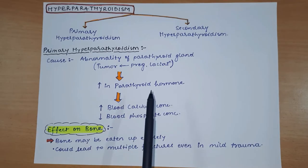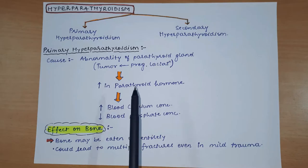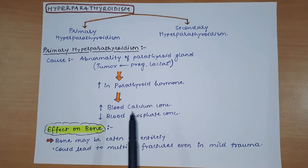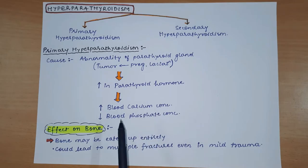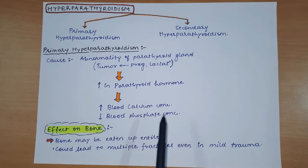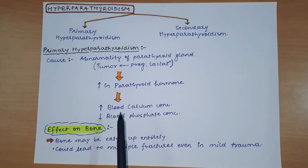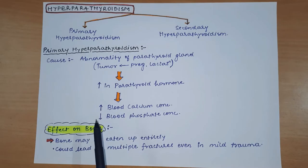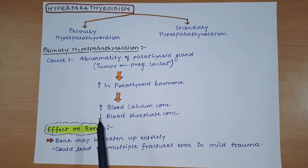Due to this increase in parathyroid hormone, its main functions - that is, increasing blood calcium concentration and decreasing blood phosphate concentration - are performed excessively. As a result, blood calcium increases greatly and blood phosphate decreases greatly.